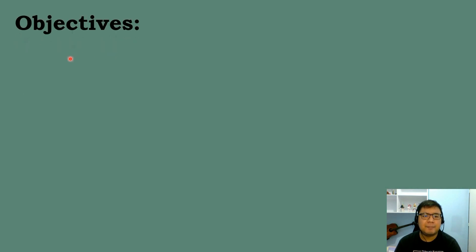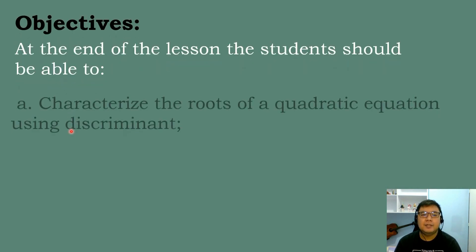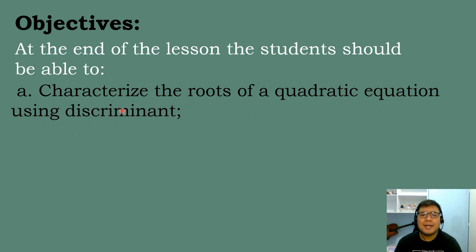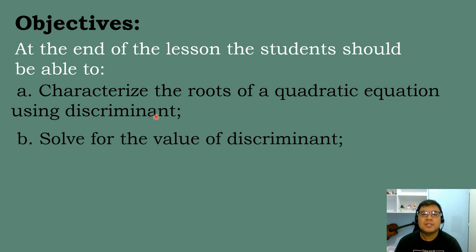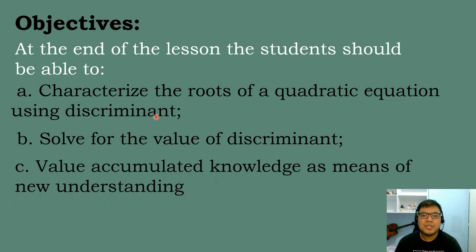These are the following objectives we need to attain for today's topic. Letter A: characterize the roots of a quadratic equation using the discriminant. Letter B: solve for the value of the discriminant. And Letter C: value accumulated knowledge as a means of new understanding.